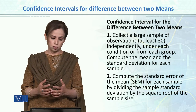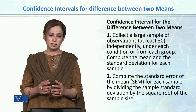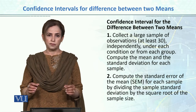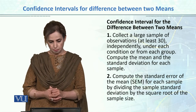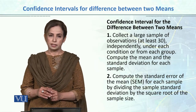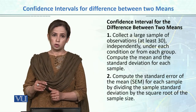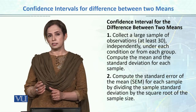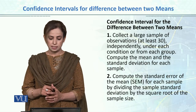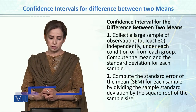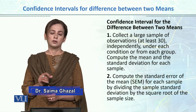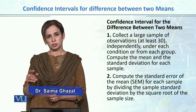So we calculate or construct confidence intervals for the difference between two means. You collect a large sample of observations — at least 30. Sample size should be greater than 30 to use the Z test or Z value with the normal distribution. If your sample size is less than 30, then you will use the T distribution.